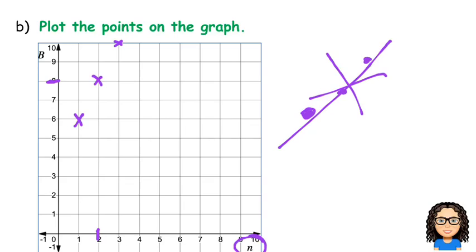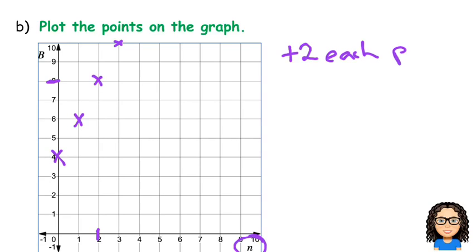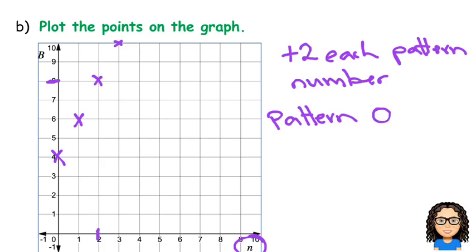If I also go back to my graph here, then we can think, well, if I had pattern number 1 with 6 buttons, what would pattern number 0 be? So, pattern number 0, I'm going to go back by 2. So, I'm going to go back by 2 down to 4. So, in terms of writing an equation, those are the two pieces of information I need to know. I need to know that I add on 2 for each pattern number. And I need to know that pattern 0 would have 4 buttons.